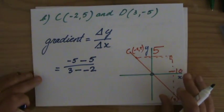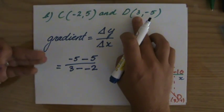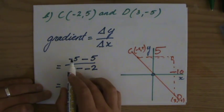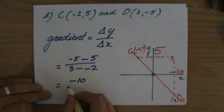So minus five—I take this y coordinate, minus five, divided by three minus minus two. So please make sure you're very consistent and very accurate with those signs. Three minus minus two. Can't go wrong if you just do it properly.